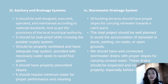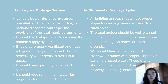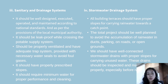For the storm water drainage system, all buildings' terraces should have proper slopes for carrying rainwater towards a catch point. The total project should be well planned to avoid accumulation of rainwater in docks, parking areas, roads, or open grounds. Well-connected stormwater drains with proper slopes should be provided for carrying unused water, and these drains should be inspected and maintained properly, especially before rains.